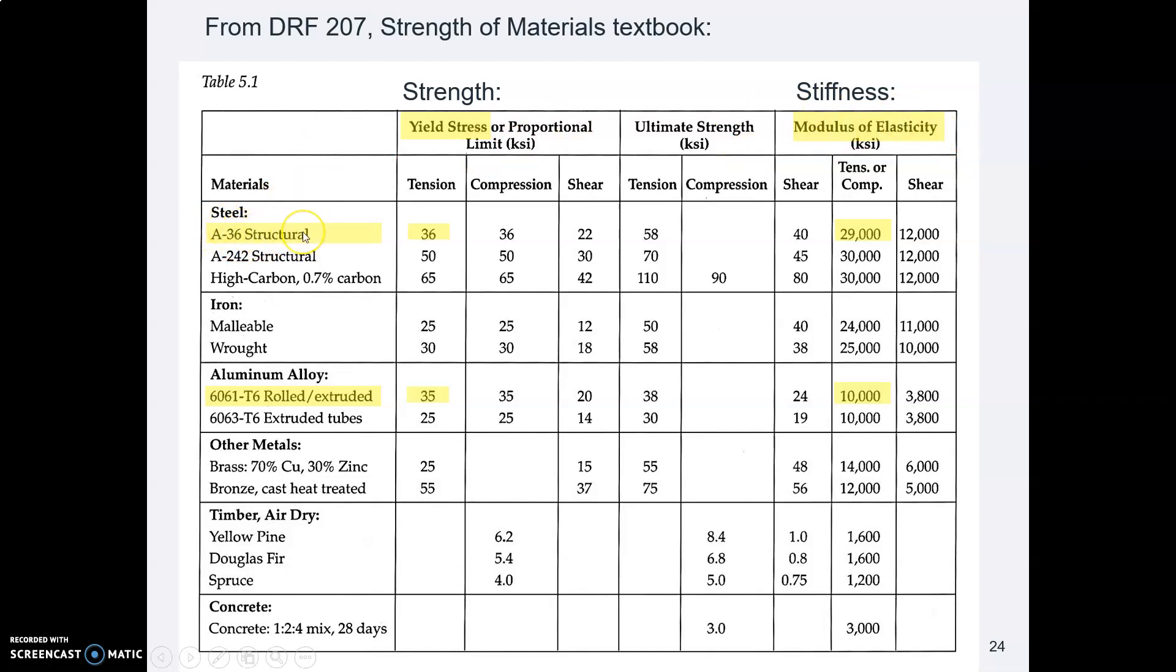And here we see mild steel, there's A36. Its yield strength is 36,000 psi. Further down, here is 6061-T6 aluminum, so it's that grade of aluminum that's heat treated. And its yield strength is 35,000 psi, so nearly identical to mild steel, and yet much lighter in weight.